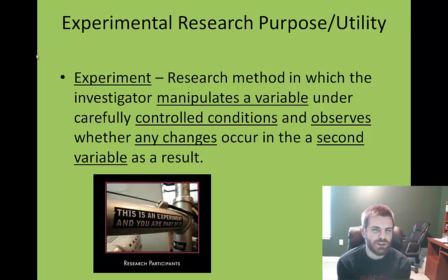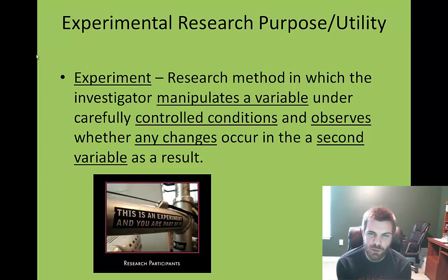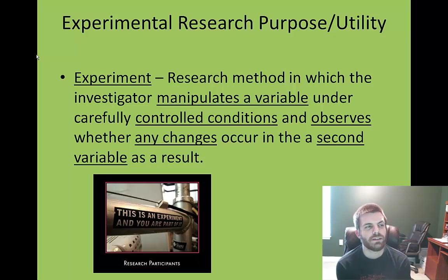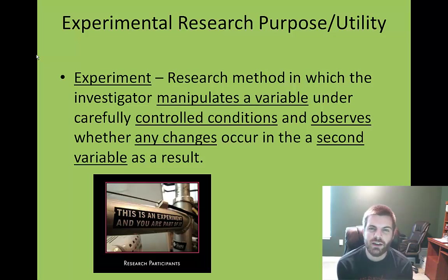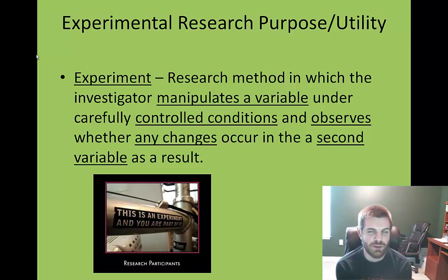The main purpose of the experimental method is to look at a variable and monitor and measure how it impacts another variable. You're manipulating one variable and measuring the effect on another variable, hopefully through controlled conditions. In an ideal setting, you are measuring how one variable that you change under carefully controlled conditions is going to possibly impact another variable.